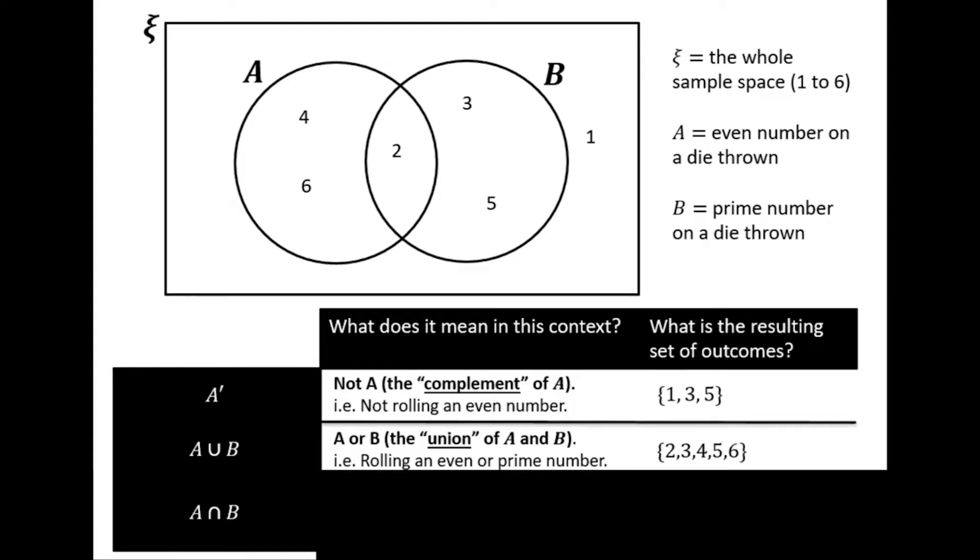And A intersection B. In this context it's anything that is A and B, anything that's an even number and also a prime number. The overlap between the two sets, in this case number two.